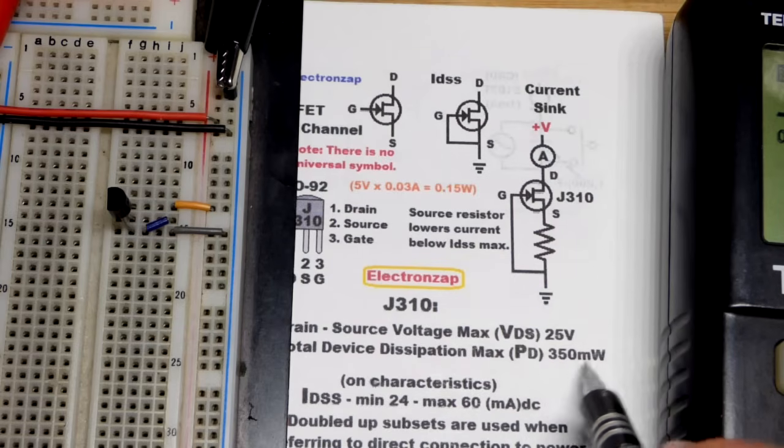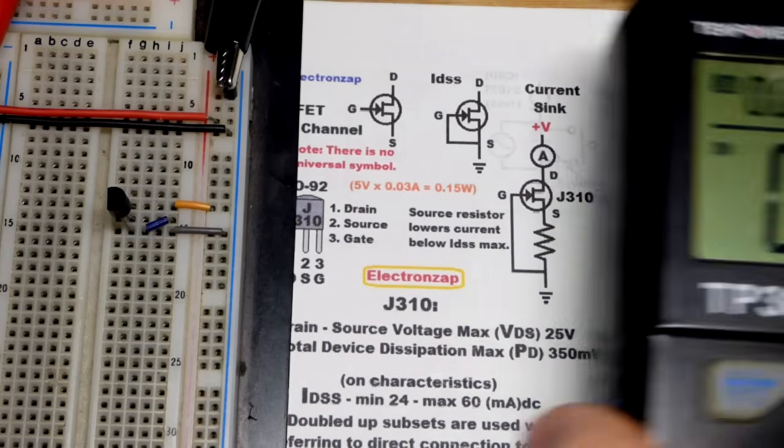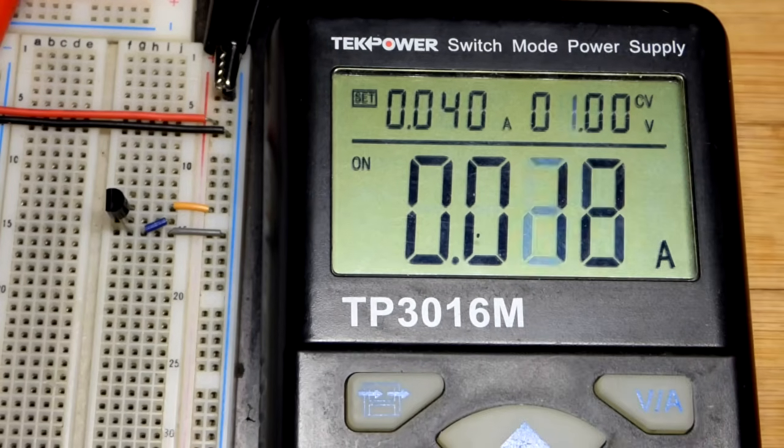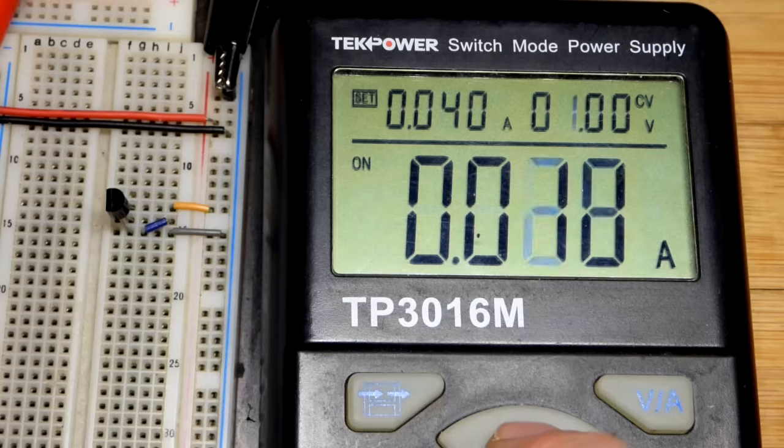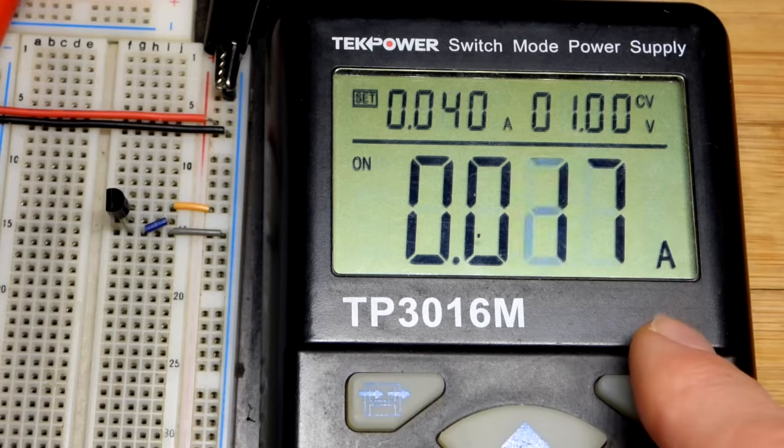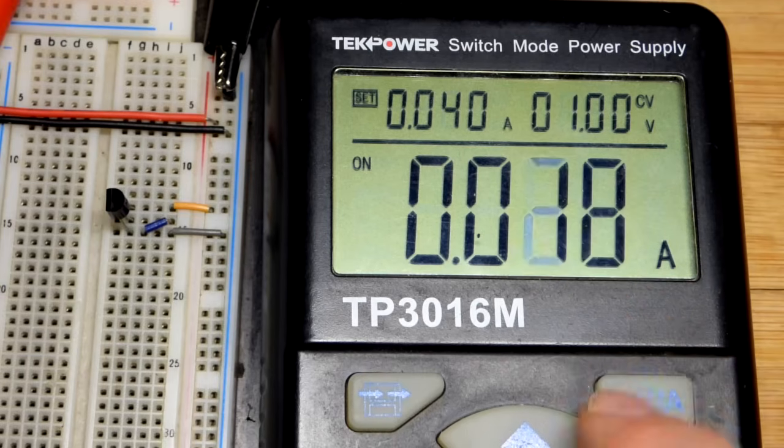So that's the same as 0.35 watts. And the wattage will be this number in amps that you see right there times volts. So right now, we have basically 0.02 watts of power right there, 20 milliwatts of power.